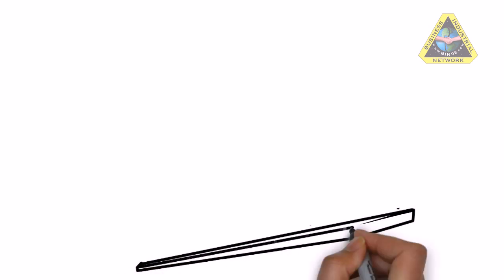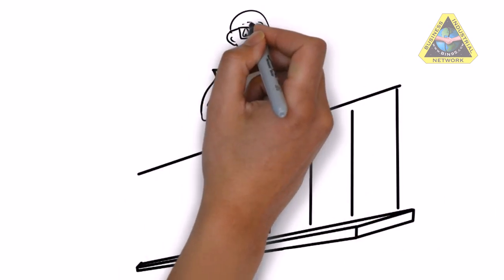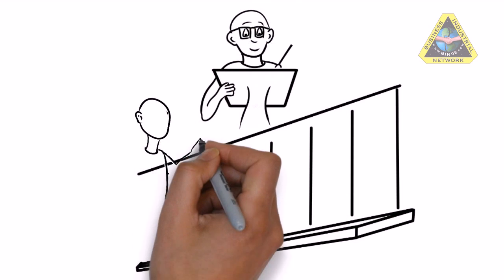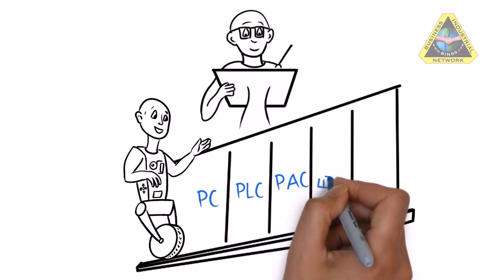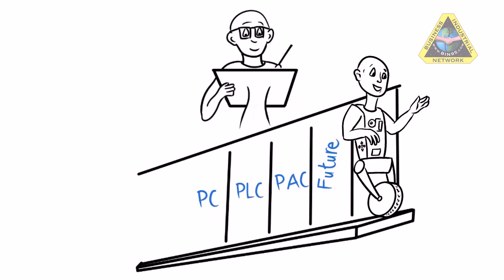Having the positive attributes of both parents, a PLC and PC, PAC is destined to change the automation world. And with the proper training of the humans who use him, machines everywhere will work in harmony and live happily ever after.